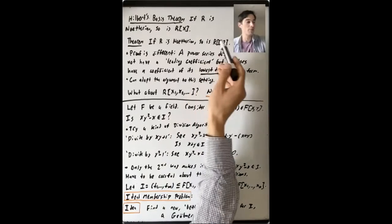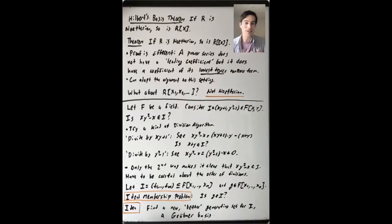So why does that proof not work the same way here? Because a power series doesn't have a leading coefficient. There doesn't have to be a largest non-zero X term in a power series, right?